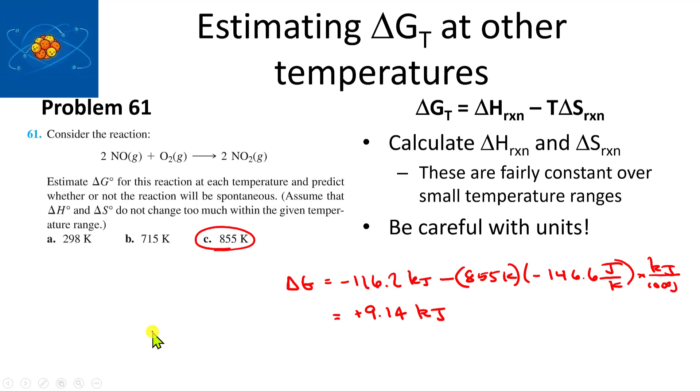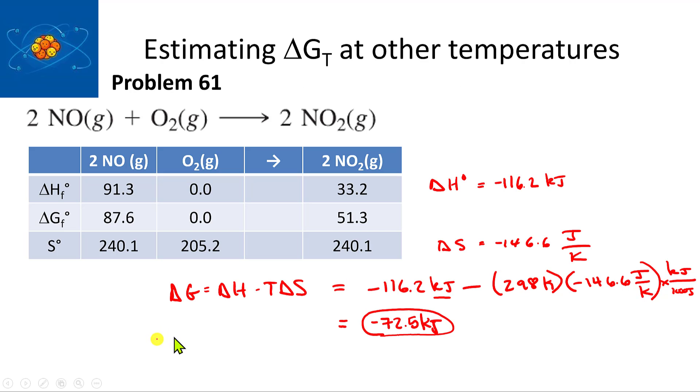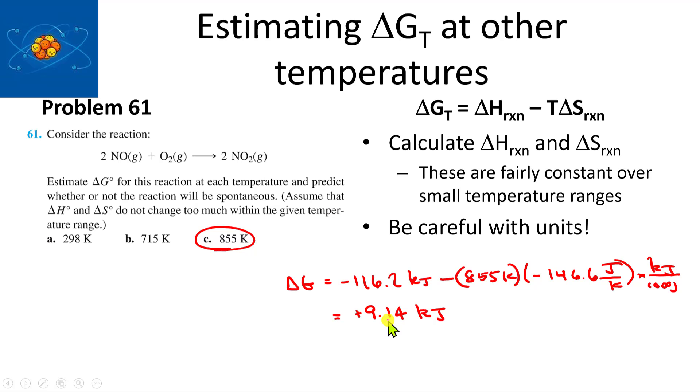One thing to do in these kinds of calculations is always verify whether that makes sense. On the earlier one, I got minus 72.5 kilojoules spontaneous, and then I got 9.14 kilojoules non-spontaneous.